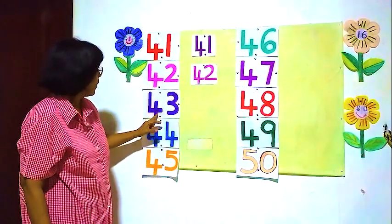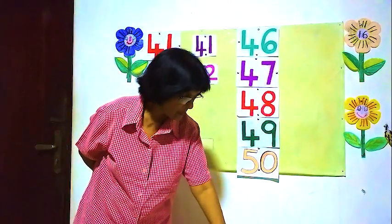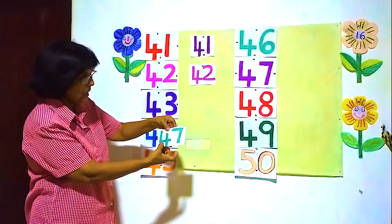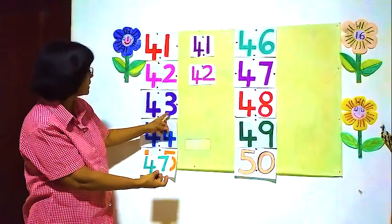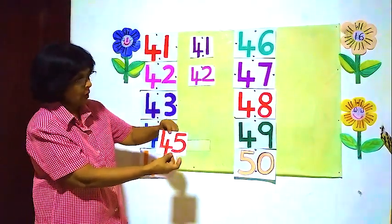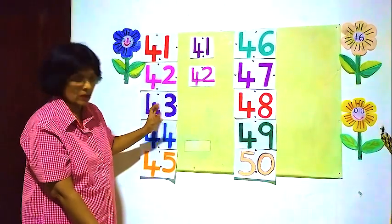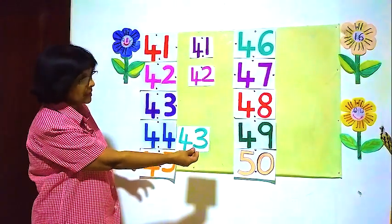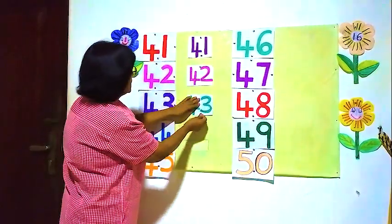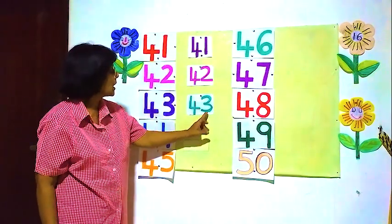Now this one: 43. Now we see this one — what is this number? 47. We want 4 and 3, 43. See this one — what is this number? 45, 45. This is not 43. Here is 43 — we want the same number, 43. This is correct, this is 43. I am going to put it here, 43.